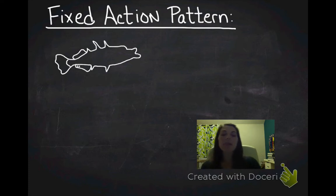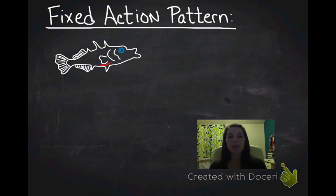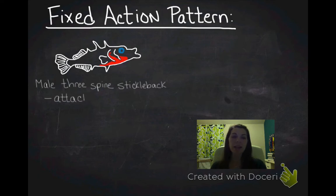I'm going to use the model organism of the three-spine stickleback fish. This is my drawing of a three-spine stickleback. This is a male three-spine stickleback. You can tell it's a male because they have a red belly.